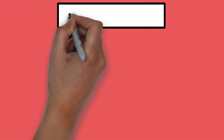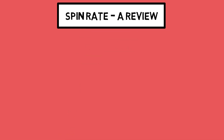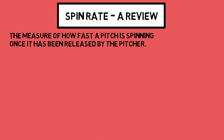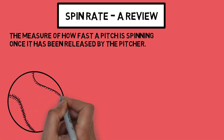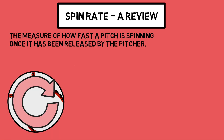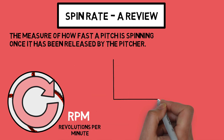First and foremost, in order to go over how sticky stuff benefits a pitcher, we need to first understand the metric that it impacts the most: spin rate. Spin rate is the measure of how fast each pitch is spinning. It's measured in revolutions per minute, or RPMs. I've talked a ton about this metric on the channel before, so we're going to keep this recap pretty brief.